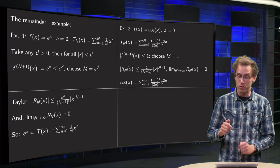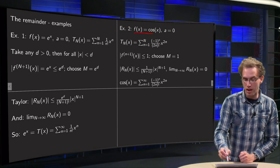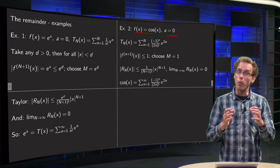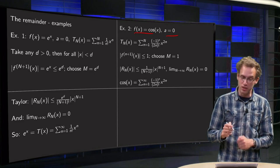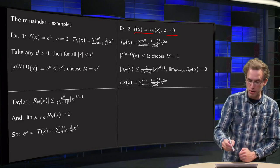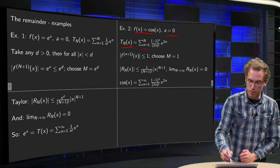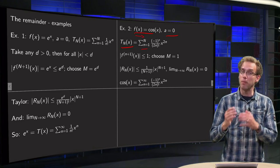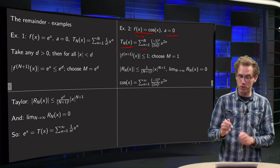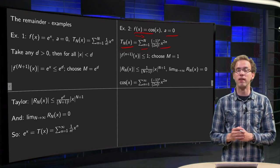So second example, the cosine of x, again around 0. Well, we know the Taylor series, we did that before, we know its Taylor polynomial as well, sum n from 1 to capital N, minus 1 to the power N divided by 2n factorial times x to the power 2n.